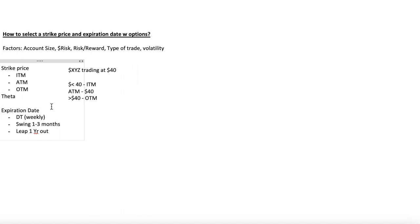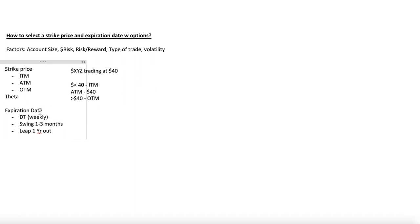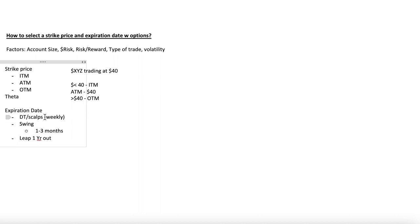Now we're going to cover expiration dates. For day trades, I play weekly expirations. So if it's a Monday, I'm going to be playing this Friday's expiration date — these are trades that I buy and sell within the same day. For swing trades, I typically go one to three months out. And for leaps, I go one year out, though leaps are not something I typically do.